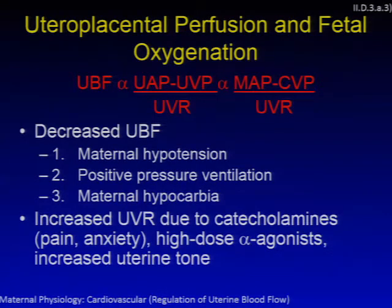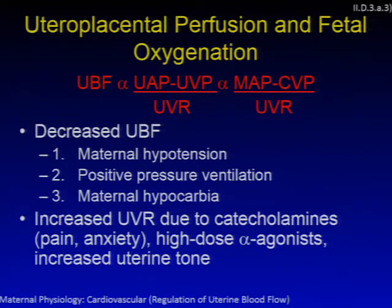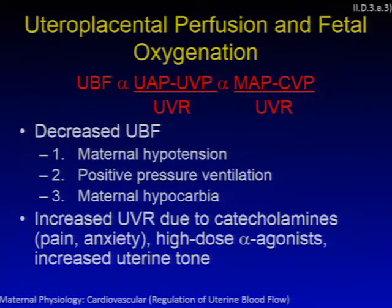Decreases in uterine blood flow can also occur due to increases in uterine vascular resistance. A woman with elevated circulating catecholamines — from pain during labor, high anxiety before surgery, or just baseline anxiety — can have decreases in uterine blood flow leading to decreases in fetal oxygenation. High doses of alpha-agonists above what we might give prophylactically after a spinal anesthetic, and increased uterine tone, can also change uterine vascular resistance unfavorably.